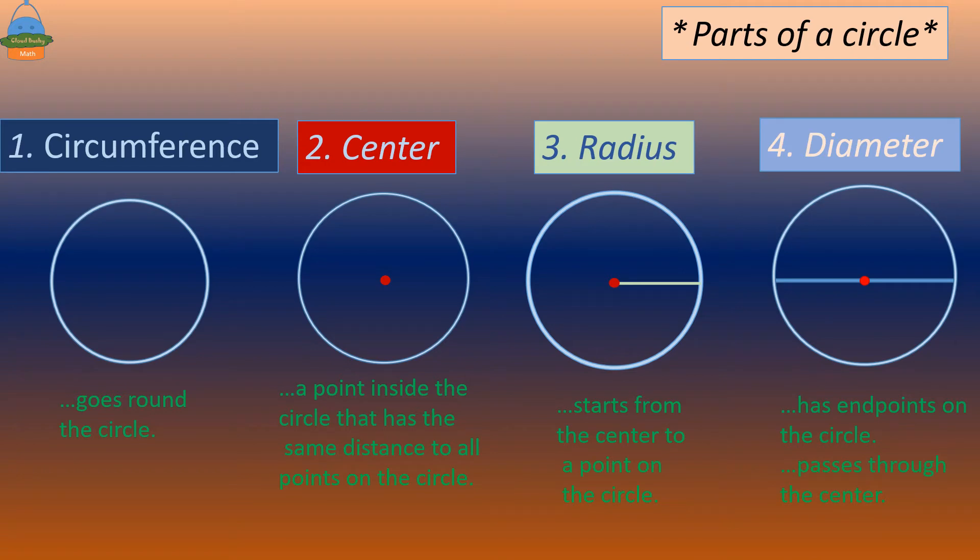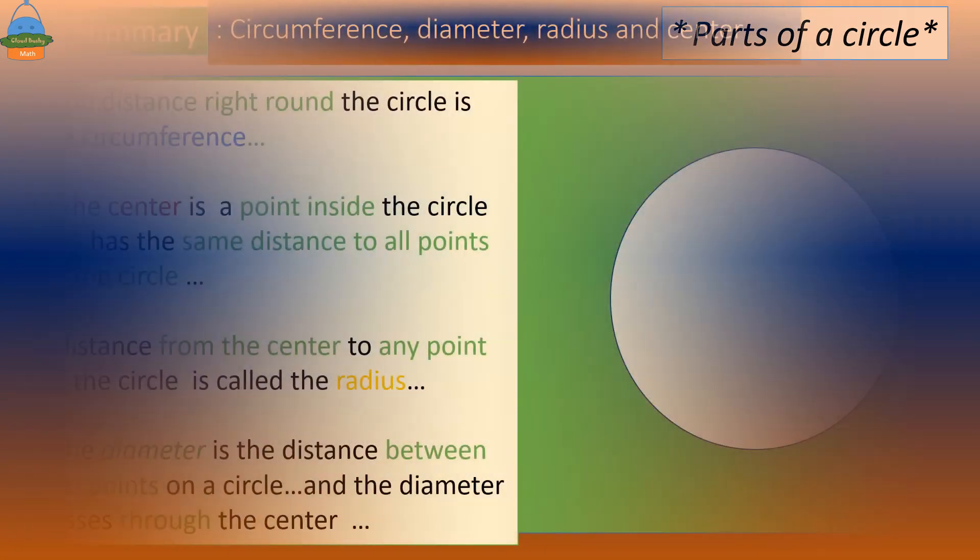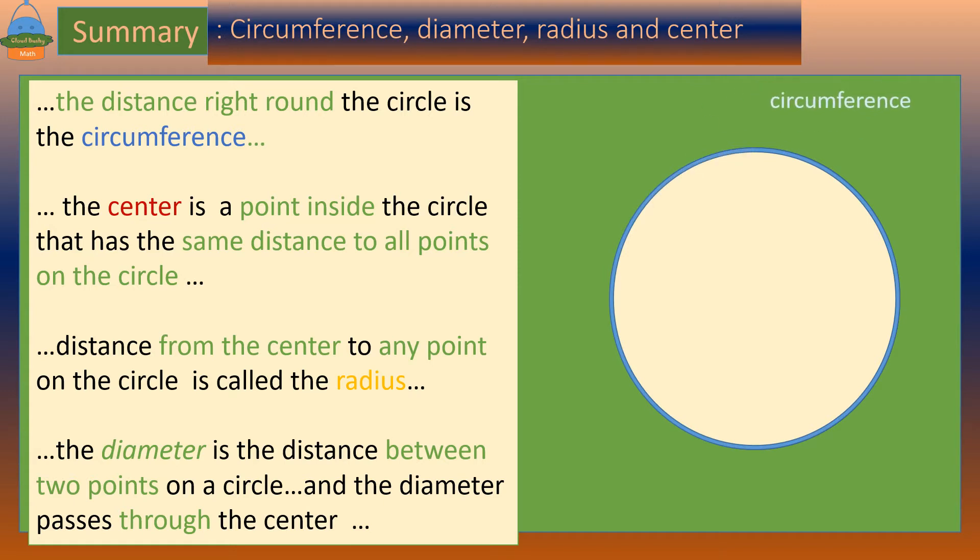So let's put all the parts together. We have the distance right around the circle, it's called the circumference, and from the center to a point on the circle is the radius. The diameter passes through the center and it's between two points on a circle.